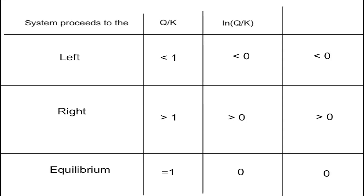To summarize all three cases, here's a table. If the system proceeds to the left, the division of Q over K is less than one, the ln of that is negative, and Delta G is also negative. If the system is proceeding to the right, the division is greater than one, the ln is positive, and Delta G is also positive. If we're at equilibrium, Q and K are the same, the division equals one, the ln of one is zero, and Delta G is zero. Knowing these factors helps you understand how the system will proceed if you have the values of Q and K, and therefore what sign of Delta G you're dealing with.